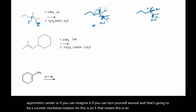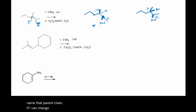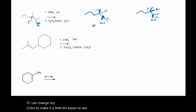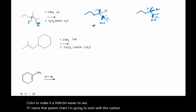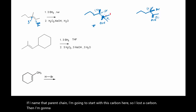So this is an S, that means this is an R. Now let's name that parent chain. If I name that parent chain, I'm going to start with this carbon here. So I have one, two, three, four, five, and six. That makes this hexanol.